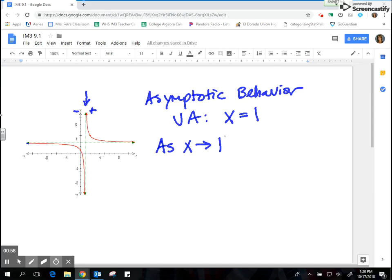We can start with either side. Let's just start with the negative side or the left side. As x approaches 1 from the left, you want to ask yourself, where are the y values going? If we trace this red graph, as we get closer and closer to 1, the y values go down to negative infinity.